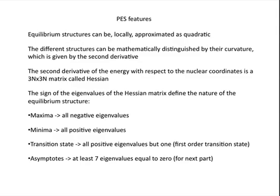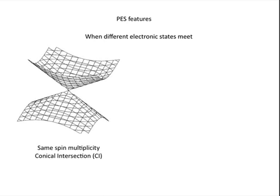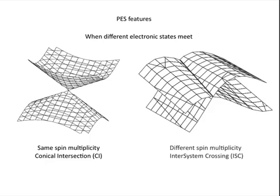Why seven will be clear in the next part of this presentation. Other features of the potential energy surface arise when different electronic states meet. If the two states share the same spin multiplicity, one can have a conical intersection. Otherwise, if they have different spin multiplicity, one can have an inter-system crossing.